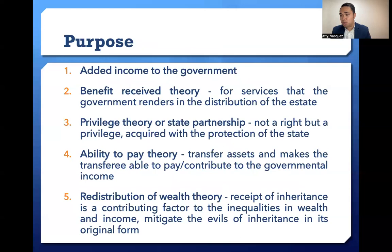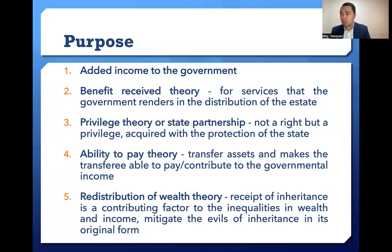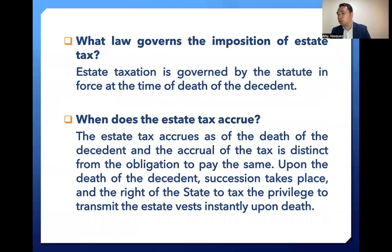There are some purposes or justifications for the imposition of estate taxes. First, it generates additional revenue to the government. Second, the benefit received theory — for services that the government renders in the distribution of the estate. Third, privilege theory or state partnership — this is a privilege, not a right, acquired with the protection of the state. Fourth, ability to pay theory — the transfer of assets makes the transferee able to pay or contribute to governmental income. Fifth, the redistribution of wealth theory — the receipt of inheritance is a contributing factor to inequalities in wealth and income, and estate taxation mitigates the evils of inheritance in its original form.